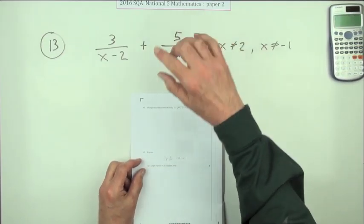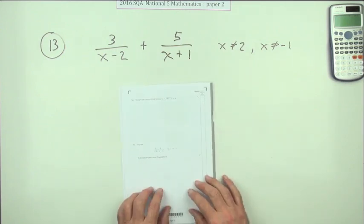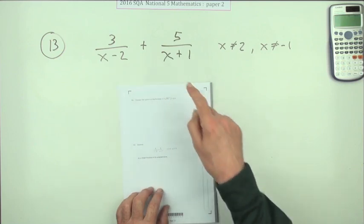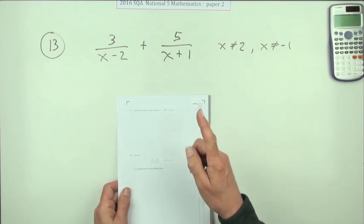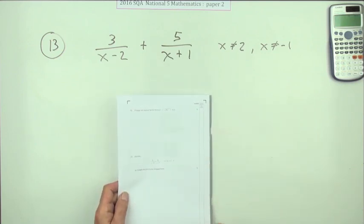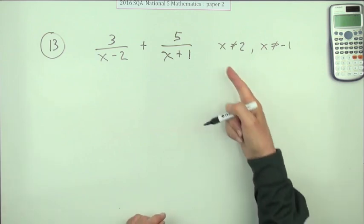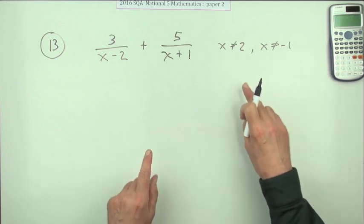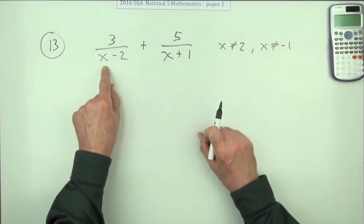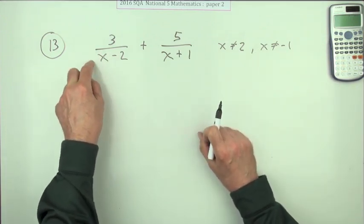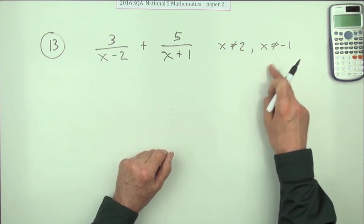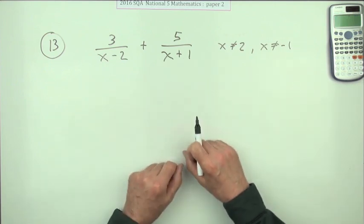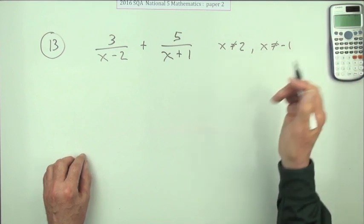So number 13 then from paper 2 of the 2016 National 5 Maths. There we are adding two fractions, adding two algebraic fractions. Give your answer as a single fraction in its simplest form. Now you may notice these two things at the side - they are not there to scare you. That's just a wee disclaimer to say well, x can't be 2 because if it was 2 that'd be zero and you can't divide by zero. Same for that, x couldn't be negative 1 because that would come to zero. You can't divide by zero. You probably just ignore that anyway.